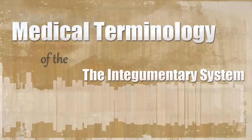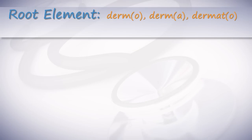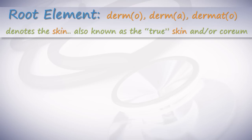Now let's take a look at the medical terminology for the integumentary system. Here's our first root element: dermo, derma, and dermato. These three denote the skin, also known as the true skin and/or corium.